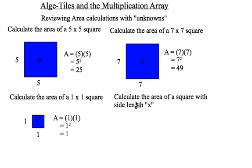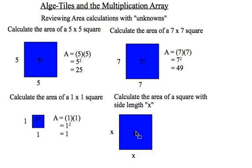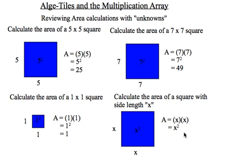And here's the big finish. Calculate the area of a square with side length x. Well, x is a number we don't know. So if I look at this square, I have x times x. And as far as I can go is x squared. I cannot actually calculate a value because I don't know x yet. So this x squared piece and the 1 will be 2 out of the 3 alge-tiles we're going to start working with in the very near future.